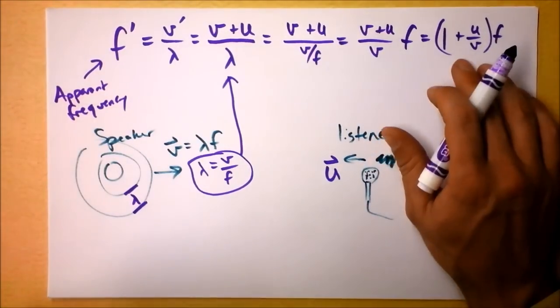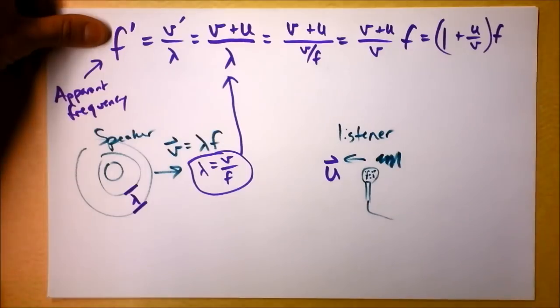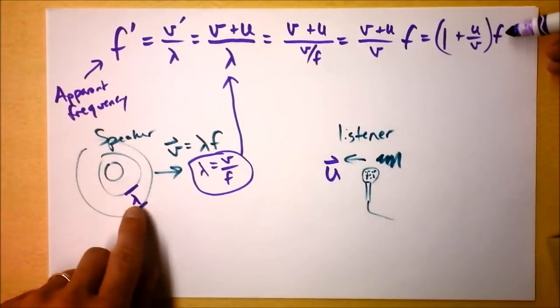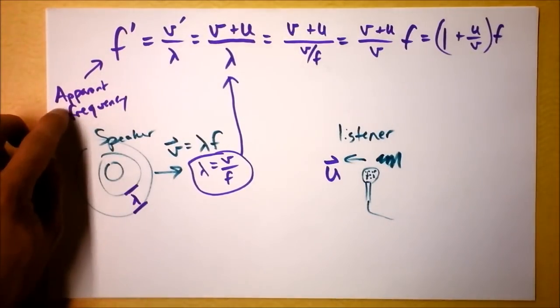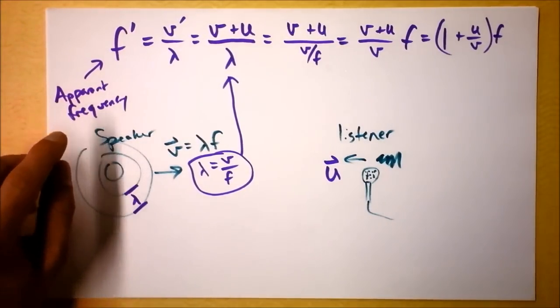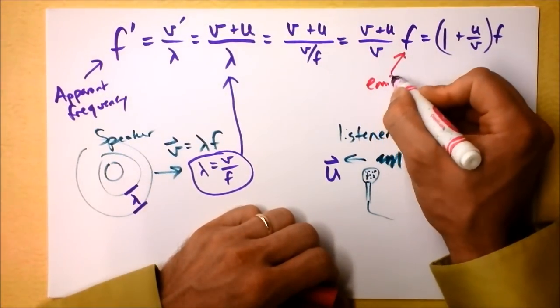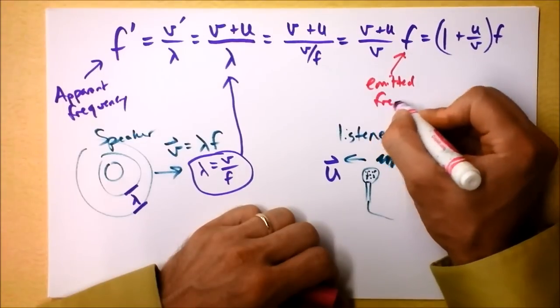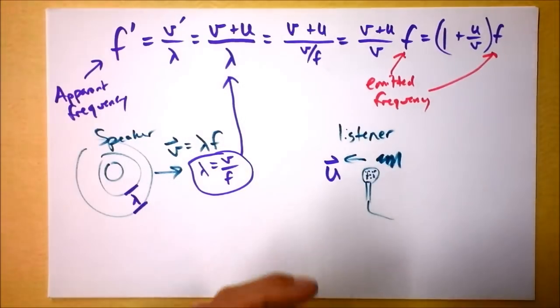Interesting. Check this out. This says that the apparent frequency is larger than the actual emitted frequency. I'm going to label that. We've got apparent frequency labeled right here. And I need to label this one as emitted frequency.